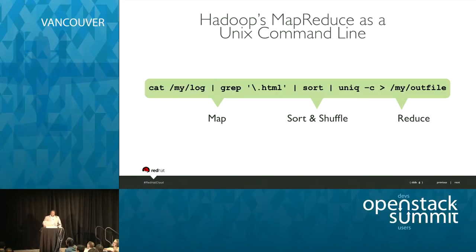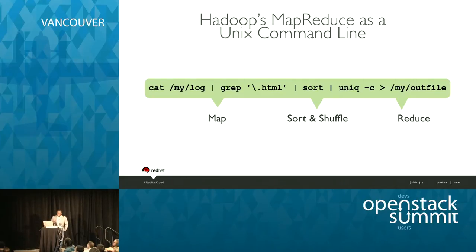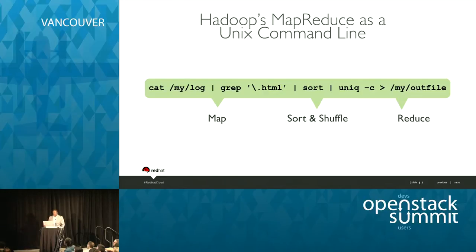This was something I saw in the Cloudera Hadoop training. For those who have a Unix background, once I saw this command line, I totally got what Hadoop was all about. Basically you have a data source, you're streaming that into something, you're doing search patterns on it, you sort it, you unique it, and you bring out a data set that means something to you. I threw that in so you could get a one-line understanding of Hadoop.